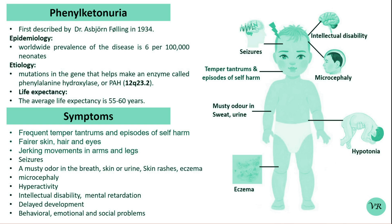The Phenylalanine hydroxylase gene (PAH) is located on the long arm of chromosome 12 at position 23.2 and consists of 12 exons. The gene encodes a 453 amino acid long Phenylalanine hydroxylase enzyme.